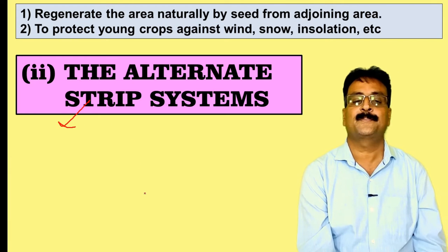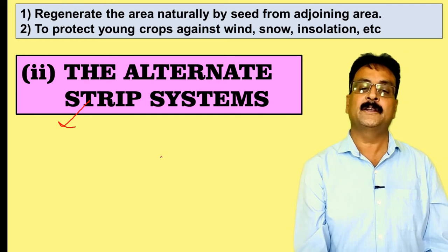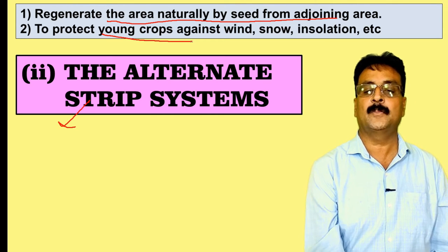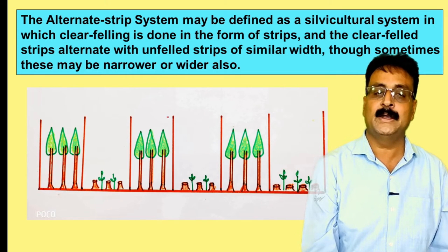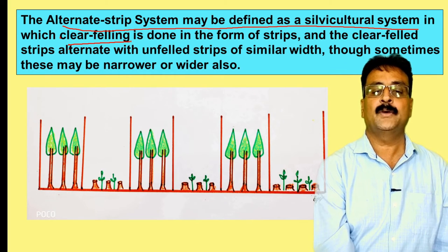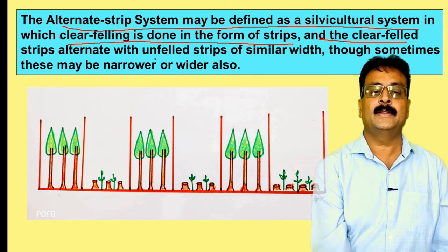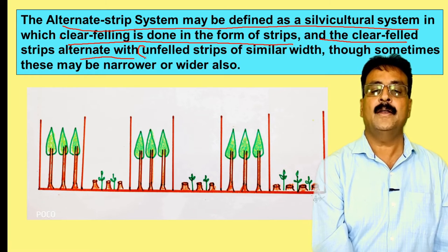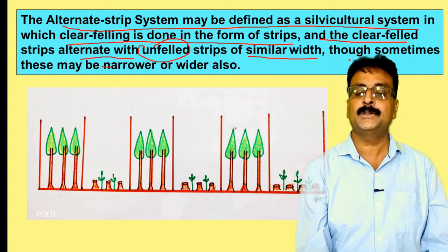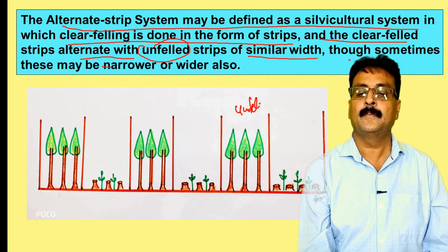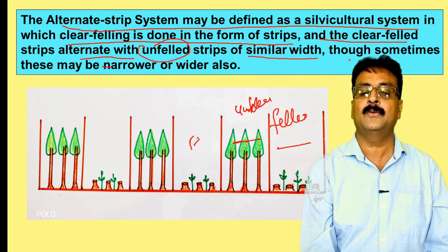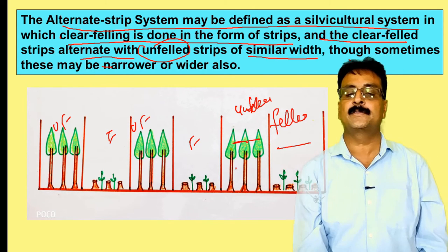Next is the alternate strip system. It is similar to the clear strip system, but it is alternate. The objective is the same: to regenerate the area naturally by seed from the adjoining area and to protect the young crop against wind, snow, and insolation. The alternate strip system is defined as a silviculture system in which clear felling is done in the form of strips, and the clear-felled strips alternate with unfelled strips of similar or different width.